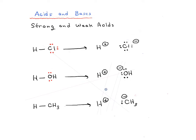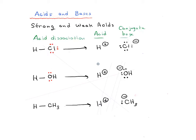In this video, we're going to go through strong and weak acids and bases. I've drawn out three examples of what we're going to call acid dissociation reactions, because each reaction gives us one equivalent of H plus and another equivalent of a conjugate base — what's left over. Each of these three reactions produces H plus, but the identity of the conjugate base is different.